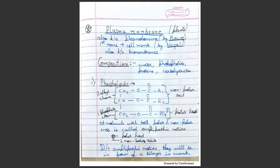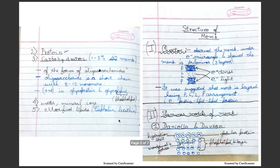Protein and carbohydrates are also present. Carbohydrates are one to five percent in the plasma membrane. It is in the form of oligosaccharides. Oligosaccharide is a short chain with eight to ten monomers. It is present in glycoprotein and glycolipid. It also has water and mineral ions. It also has modified lipids such as cephalin and lecithin.